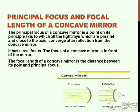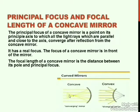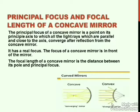The principal focus of a concave mirror is the point on its principal axis to which all light rays that are parallel and close to the axis converge after reflection from the concave mirror. Concave mirror is a converging mirror — when all the parallel incident light rays reflect back and gather at a single point, that is called converging. Diverging is the opposite — all light rays scatter away into different directions.